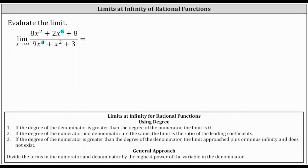Looking at the three cases below, because the degree of the numerator is greater than the degree of the denominator, the limit approaches plus or minus infinity and does not exist. Focusing on just these two terms, as x approaches infinity, 2x to the fifth is positive and so is 9x to the third, and therefore this limit approaches positive infinity, which indicates the limit doesn't exist.